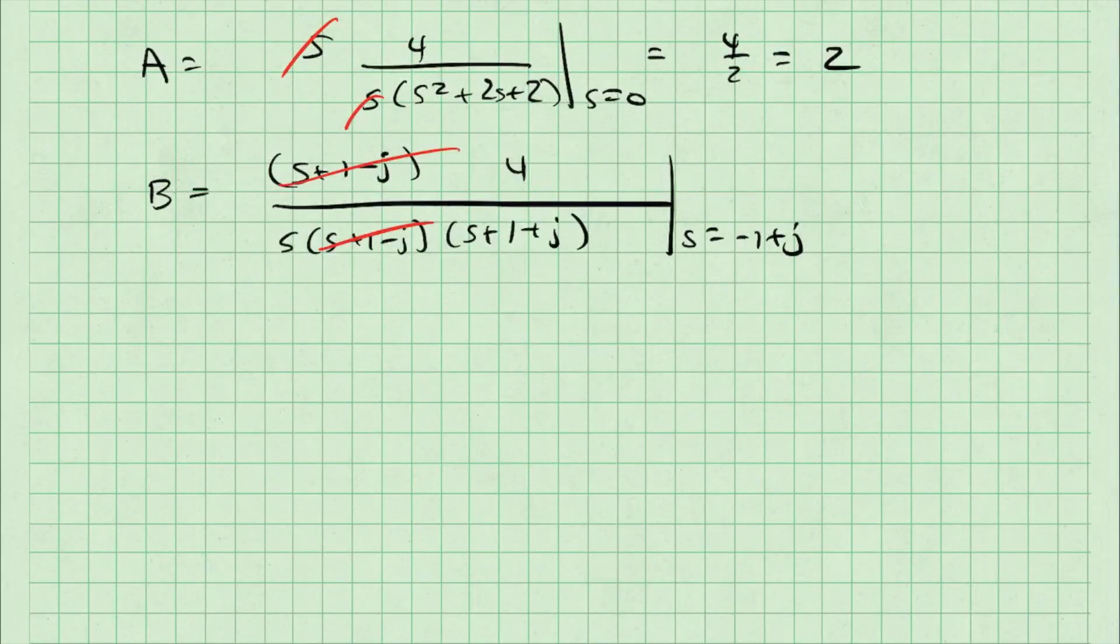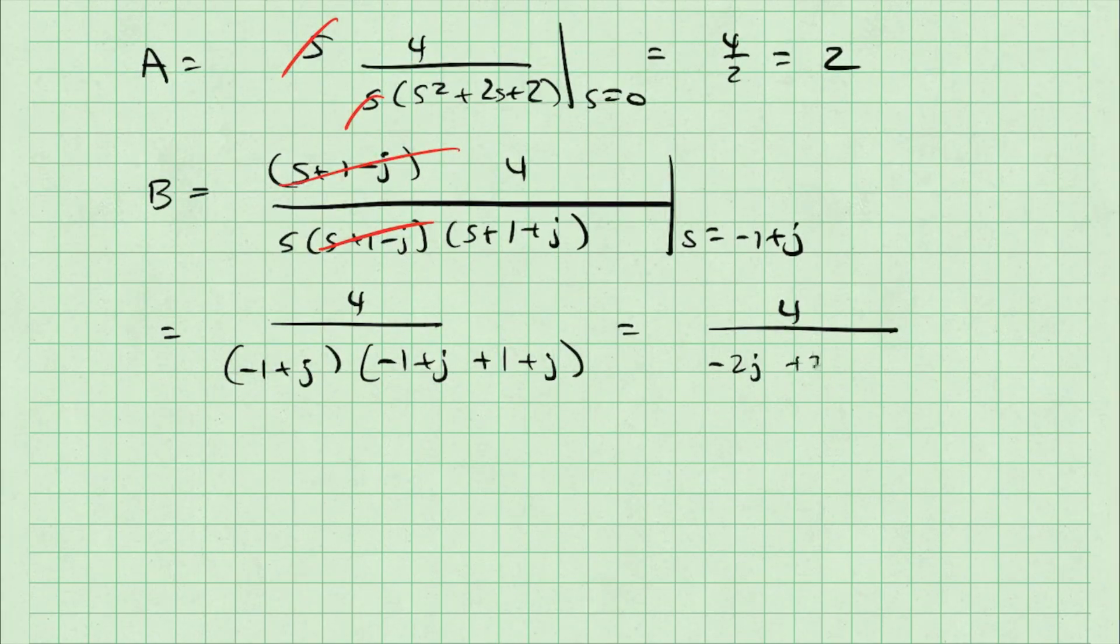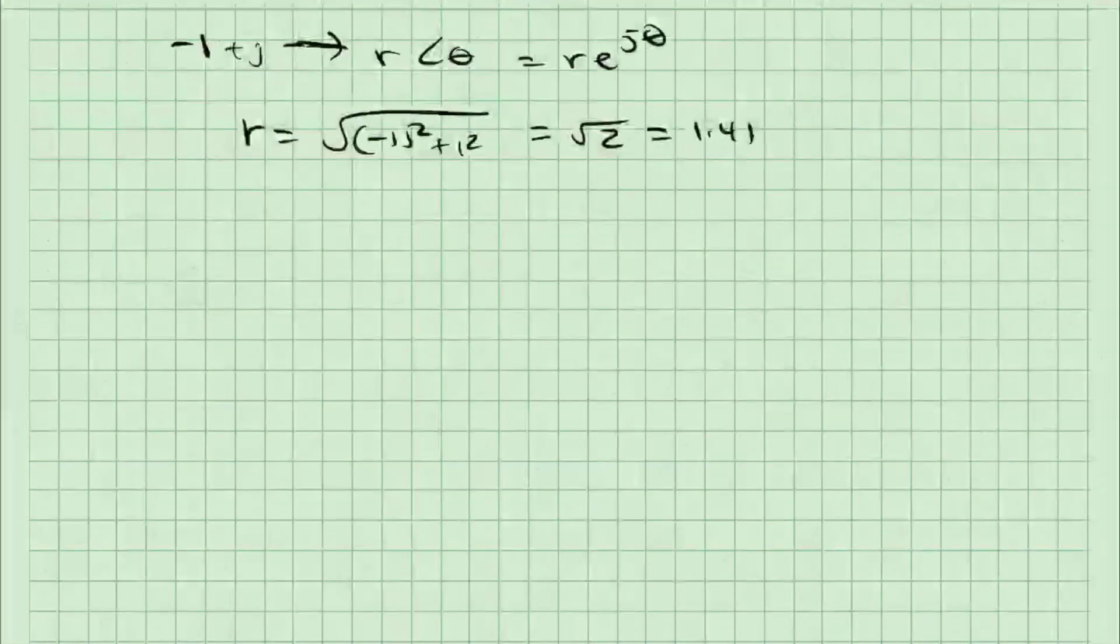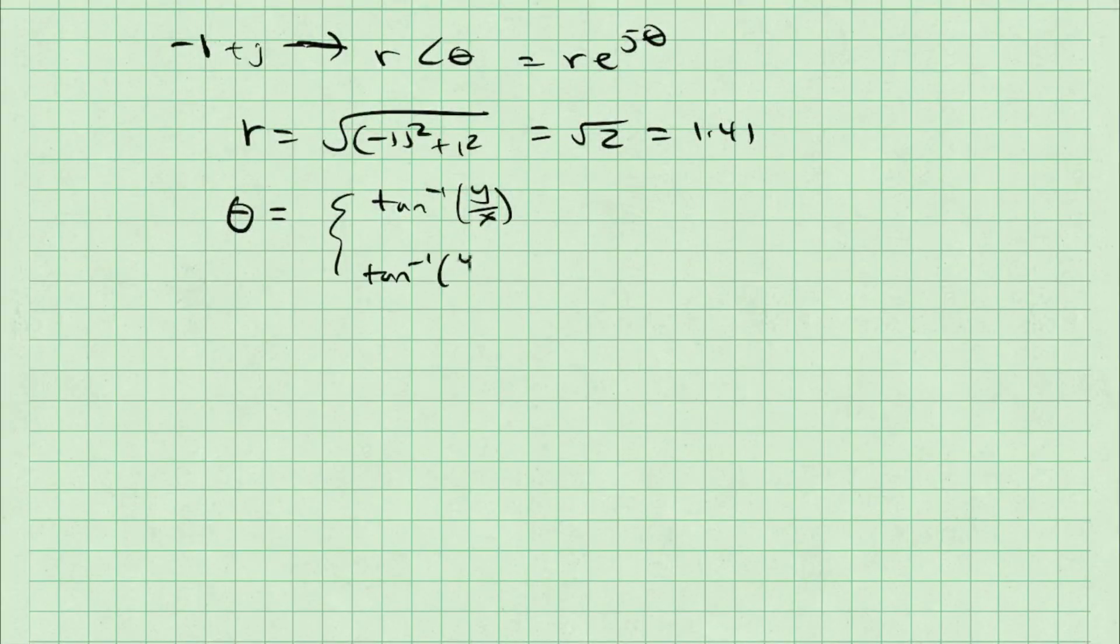I can do the same thing with my complex roots. To find b, I'll take s plus 1 minus j, multiply by the transfer function, and then evaluate at s equals minus 1 plus j. When I do so, I find that this is minus 1 plus j. We can convert this into polar form to find that this is a magnitude of 1.41 with an angle of 135 degrees. I've noted here how I convert from rectangular to polar form for complex numbers, just so that you are sure where we're going.